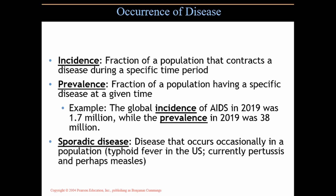For example, the global incidence of AIDS in 2019 was 1.7 million — meaning 1.7 million people contracted AIDS in that year. In 2019, the prevalence, the number of people already diagnosed with AIDS, was 38 million. How many people get it in a particular time period is the incidence, while prevalence — how present is it in a population — was 38 million in 2019, with 1.7 million new infections added that year.